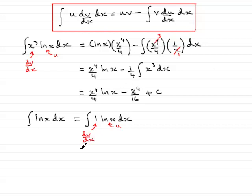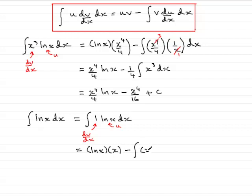When we integrate by parts, we've got the u part, natural log of x, multiplied by the integral of the other part. We've got the 1 here, integrated with respect to x, which is x. Then minus the integral of the part we just integrated — that's the v part — multiplied by the differential of the u part. The differential of natural log of x is 1 over x, and that's integrated with respect to x.